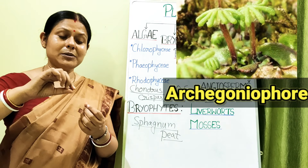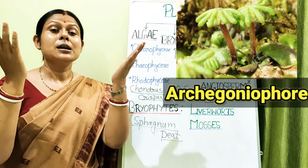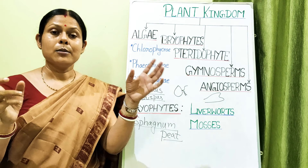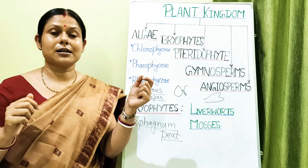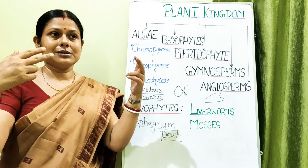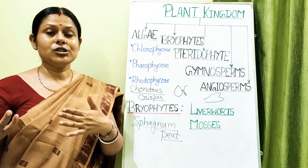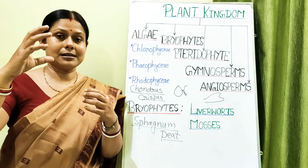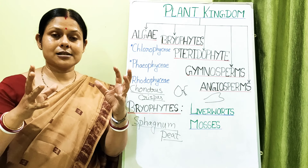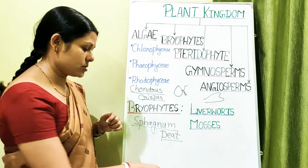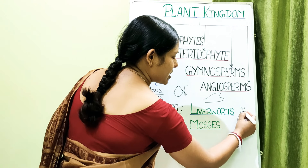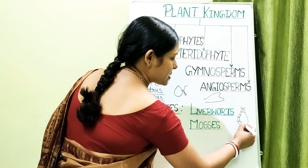The female reproductive structure is the archegoniophore, bearing the archegonium. Morphologically, both antheridiophore and archegoniophore look like umbrella-type structures, but the antheridiophore's umbrella is intact while the archegoniophore's umbrella is serrated with finger-like projections. The archegonium is an enclosed, jacketed, flask-like structure with neck cells.